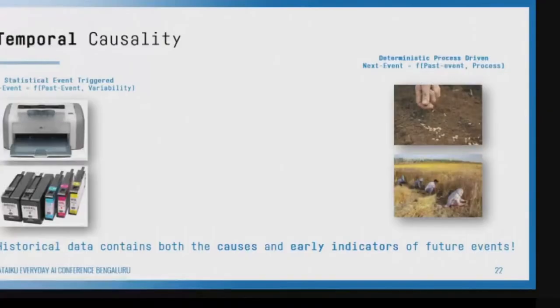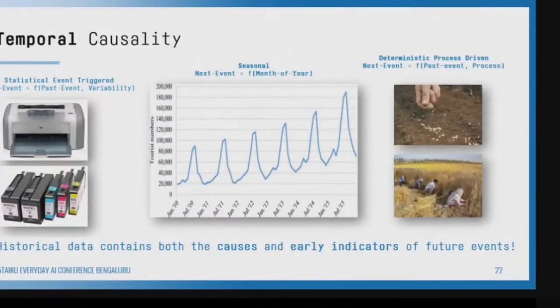There are lots of events causing other events — this happens in Fitbit events for medical events, in drought leading to price rises. In agriculture, when you sow leads to when you harvest, and it's a function of how you did your farming and what was the soil type. Sometimes things are just seasonal with no event-based cause — back to school, back to work, we are going to buy pants again.